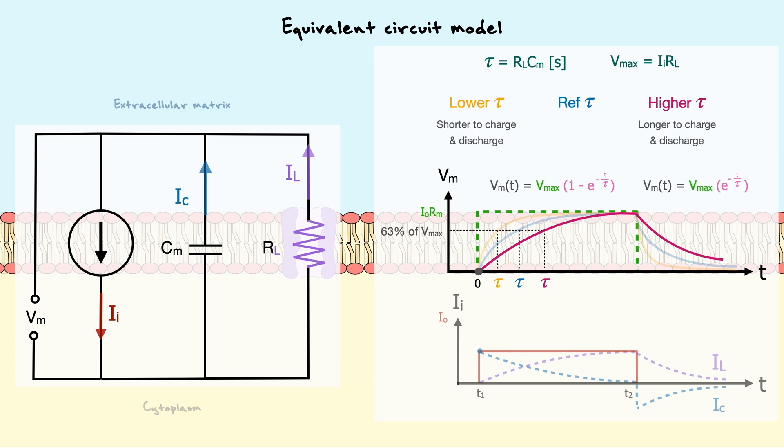With a higher tau, the opposite relation is true, which is that the potential will take longer to charge but also longer to discharge. Hence, you can see that by using a value of the time constant, we can compare neurons to see how the signals are maintained in them.